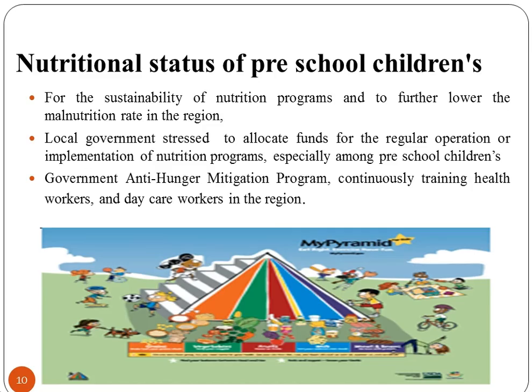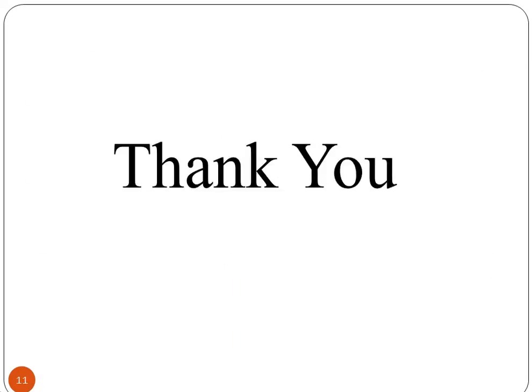To study the nutritional status of pre-school children and support sustainability of nutrition programs and further lower malnutrition rates in the region, local governments stress allocating funds for the regular operation of nutrition programs, especially among pre-school children. Government anti-hunger mitigation programs continue training health workers and daycare workers in the region. In this session, we covered the different problems leading to poor nutritional status, planning care, and different concepts of nutritional status.